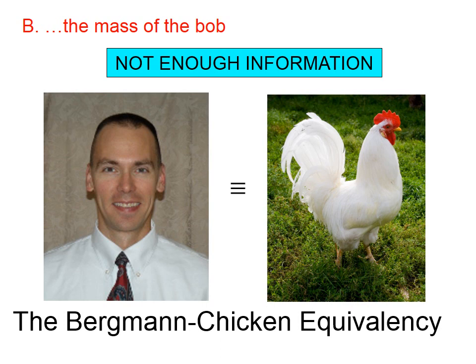If you take Mr. Bergman off, and you attach a chicken to the end of that 6.7 meter long pendulum, the chicken will swing back and forth with the exact same period that Mr. Bergman does, which goes to show that in some cases, there is no definable difference between Mr. Bergman and a chicken.